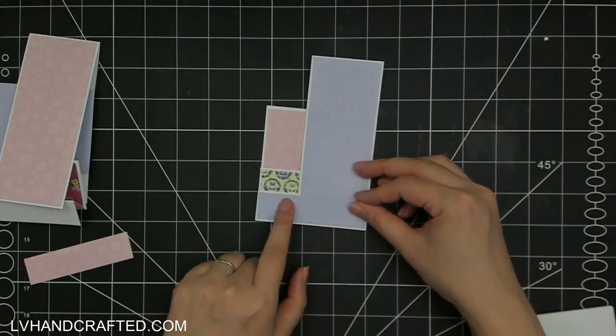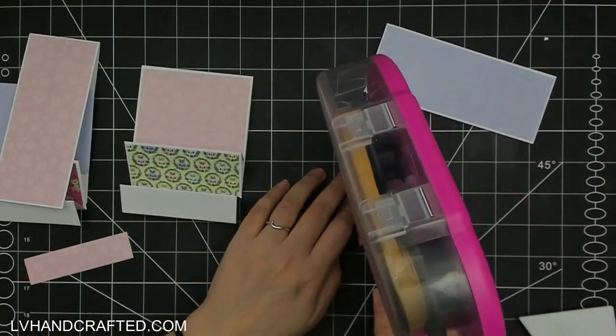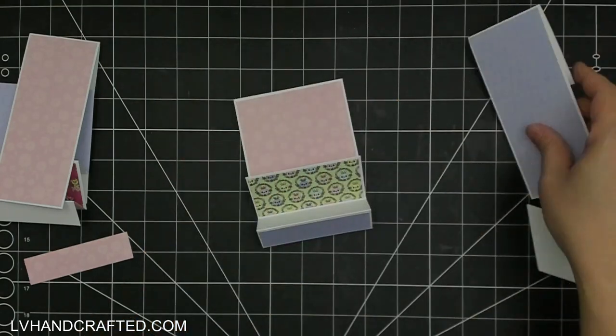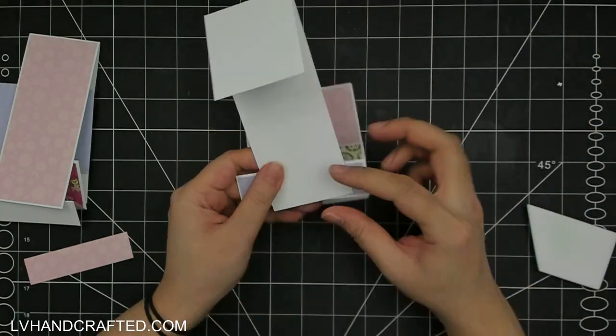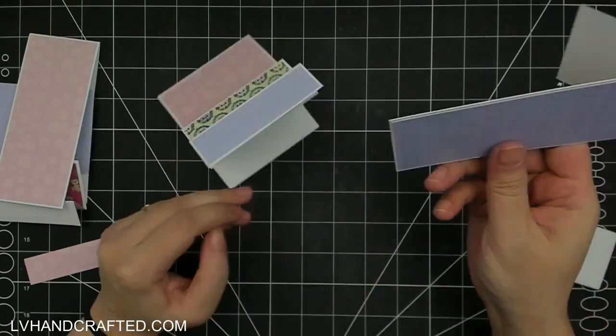And you can, if you want for this front most step, you could actually attach your tall stepper first, and then attach pattern paper going across the entire bottom. So that is definitely an option if you want to go for that look.